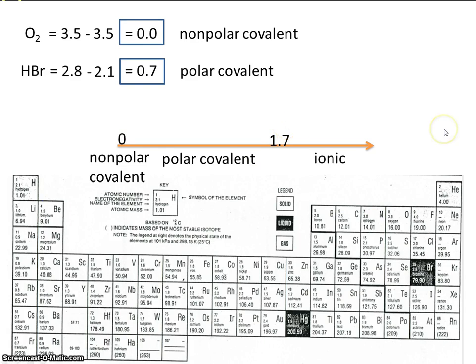Let's look at one more. Sodium bromide. Sodium's electronegativity value is 0.9. Bromine's, once again, is 2.8. So 2.8 minus 0.9. The difference is 1.9. 1.9 is greater than 1.7, so we would call that bond ionic.